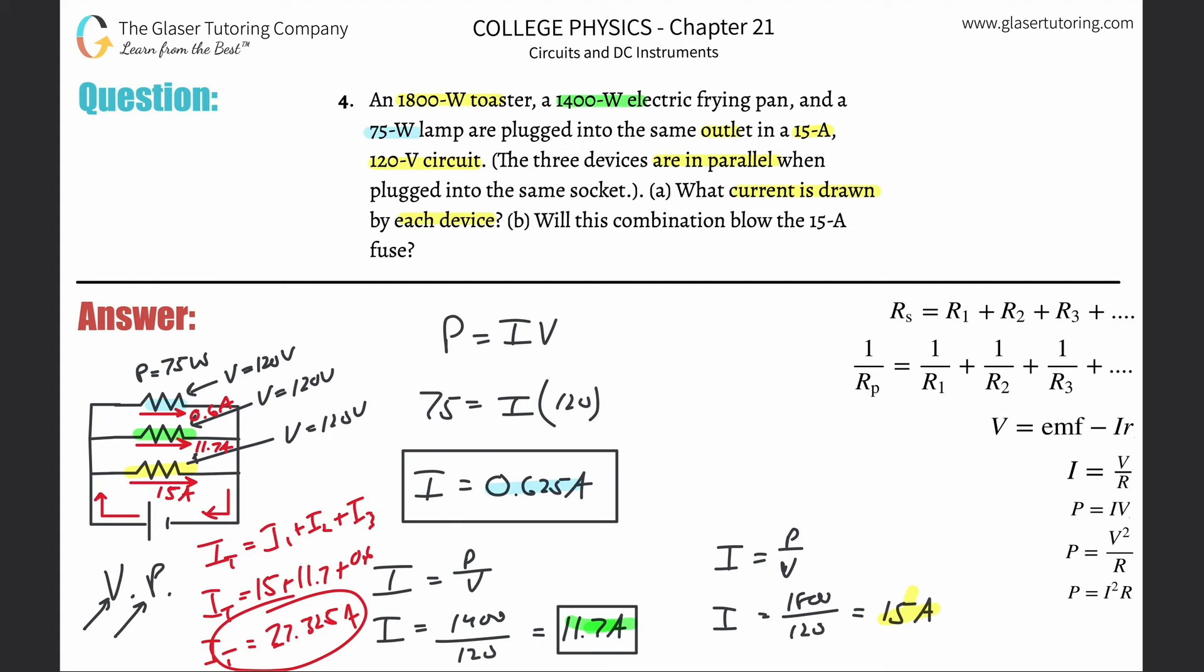Now, it didn't ask for that, but I think in problem B it said, will this combination blow the 15-amp fuse? Yes, it will. The outlet is rated for 15 amps—that's the maximum capacity—and there's a built-in circuit breaker that will trip or break the circuit if the total amount of current drawn is higher than what it's rated for. So yes, it will blow the fuse.